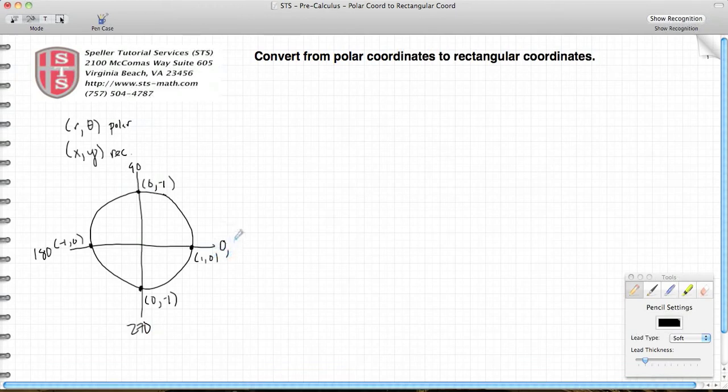270 degrees and back to 360. The distance around the circle is 360 degrees.